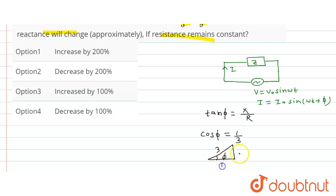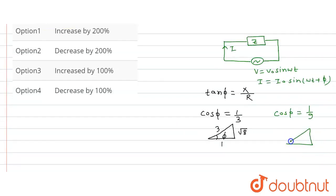And again, cos phi changes to 1/9. So this will be: angle phi, this is 9, this is 1, and this will be under root of 18 minus 1, which is 80.